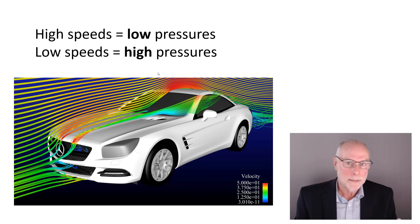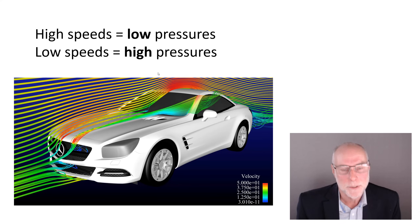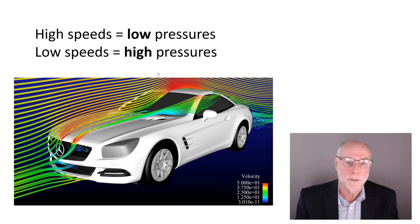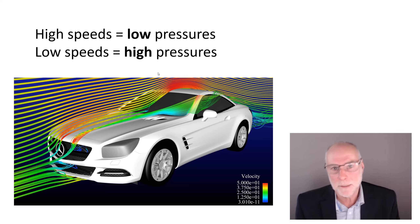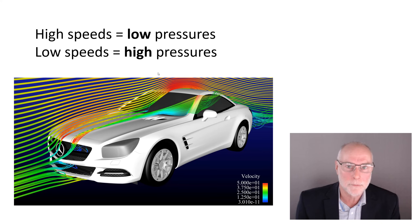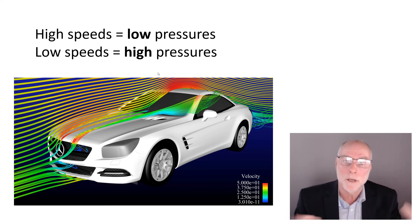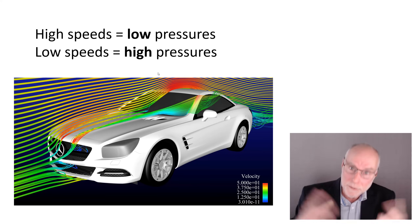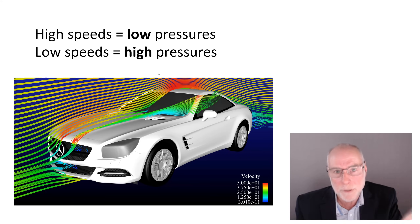The second idea to take on board directly relates to the first. Where you have high airflow speeds, you have low pressures. Where you have low airflow speeds, you have high pressures. These occur on the car even when the car is going the same speed down the road. Because there are pressure variations all over the car, there are also local flow speed variations — or to turn it around, because there are local flow speed variations, there are also pressure variations.